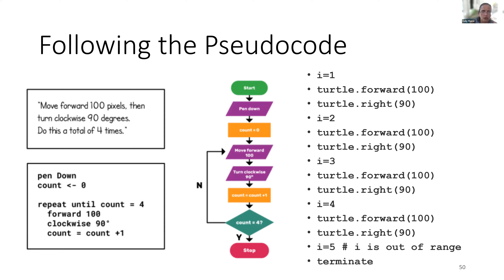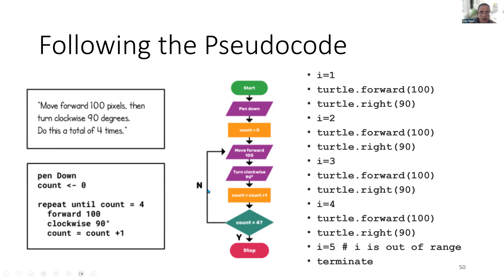We can also follow this through in the pseudocode, stepping through the diagram — pen down, count equals zero, and so on. It can be useful to diagram these things out because it helps you understand what steps need to go in what order. The trace through the flowchart gives us the sense of what the actual code needs to be for this to work.